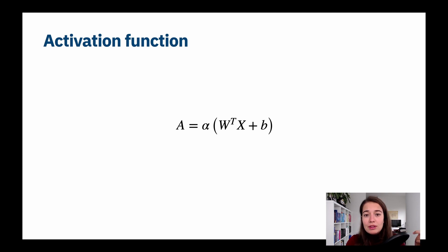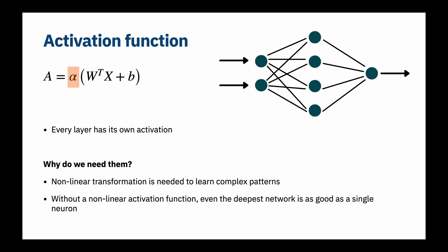One thing we haven't talked about yet is the activation function — that little alpha. An activation function is basically a way to make our network learn complex things. Every layer in the network has its own activation function. We need them because we need non-linearity. If you only have a linear activation — meaning no alpha — then everything is linear, and this linearity renders the whole network useless because you won't be able to learn anything more complex than what can be represented with a linear equation.